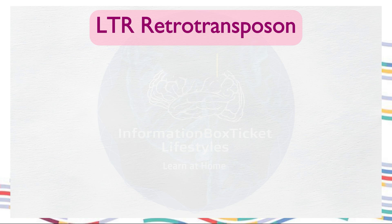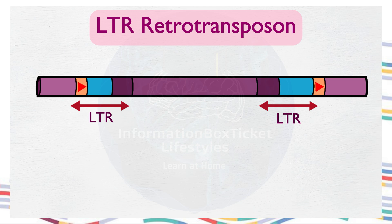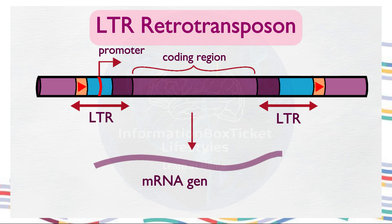Let's start with LTR-retrotransposons. These elements have long terminal repeats (LTRs) on both ends. Within the left LTR, there is a promoter sequence where transcription begins, along with a coding region that produces integrase and other enzymes essential for the transposition process. Following a successful transcription round, LTR-retrotransposon mRNA is generated.